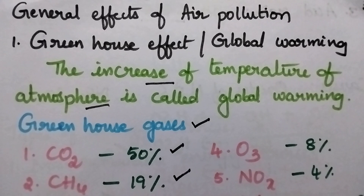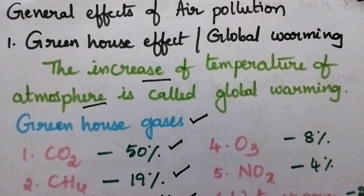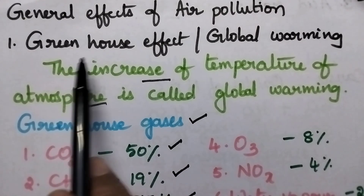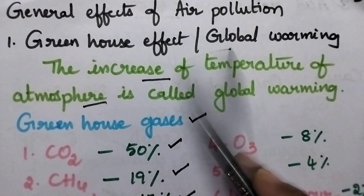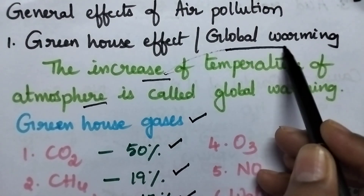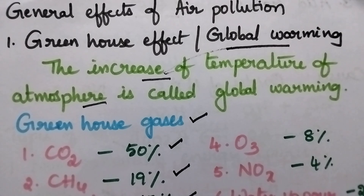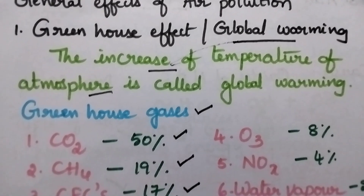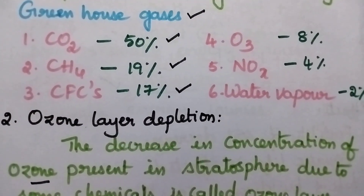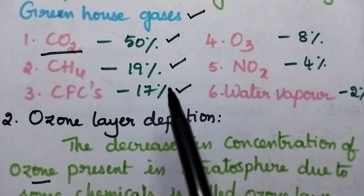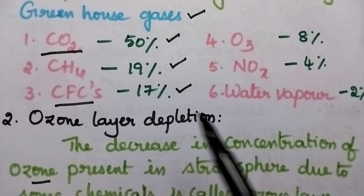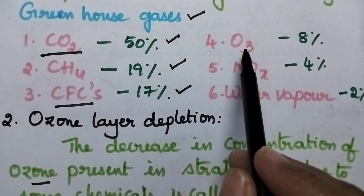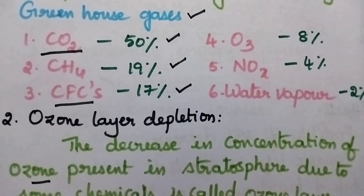There are three general effects of air pollution: greenhouse effect, ozone depletion and acid rain. The greenhouse effect is also called global warming, which means there will be an increase in the temperature of the atmosphere. The gases responsible for the greenhouse effect are called greenhouse gases. The major contributing greenhouse gas is carbon dioxide, followed by methane, chlorofluorocarbons, ozone, oxides of nitrogen and water vapor.